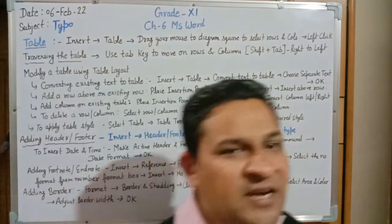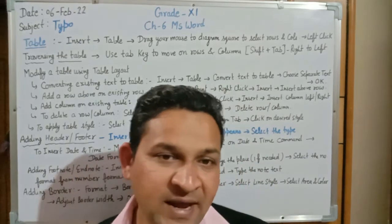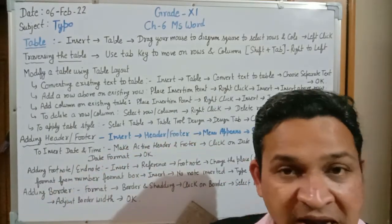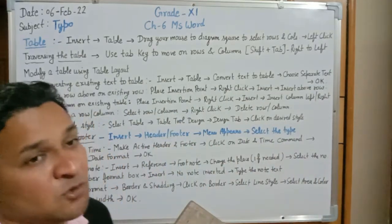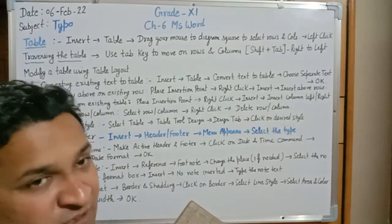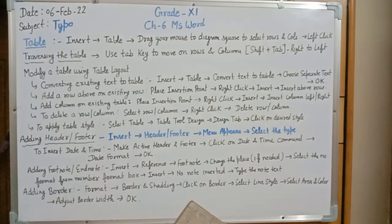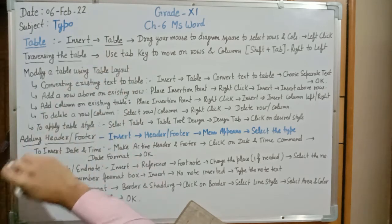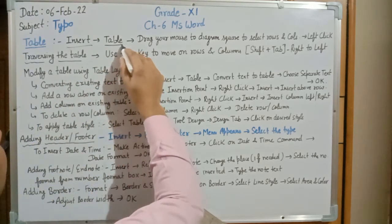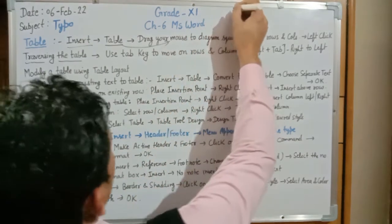A table is a collection of rows and columns. In MS Word we can create a table using the Insert option. To insert a new table in your document you need the Insert tab. The steps to follow: first, click on Insert; next, click on the Table option; afterwards, drag your mouse over the diagram square to select rows and columns.